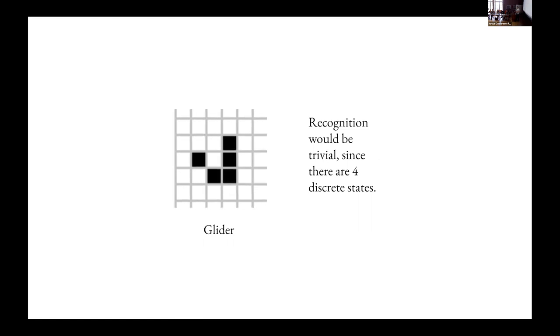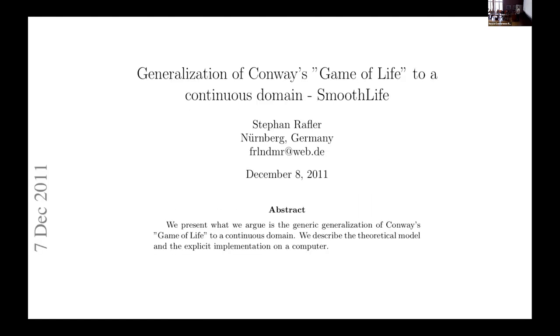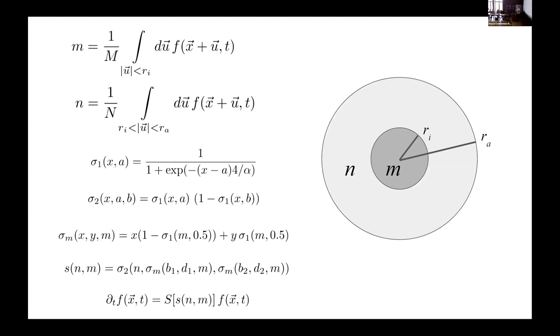Recognizing this object would be very trivial since there are only four discrete states. So that could be done with some really simple good old-fashioned AI type rules. Now, some of you may know, and most of you probably don't, the continuous space and time generalization of the game of life that was invented by Stefan Raffler back in 2011. It's a cool system and it involves rather than just the central square and the eight squares around it, two donuts and integrating in the inner circle and integrating in the donut and having sort of smooth sigmoid sort of transition rules that are just like life but that are all operating in the continuous domain and that look like a PDE.